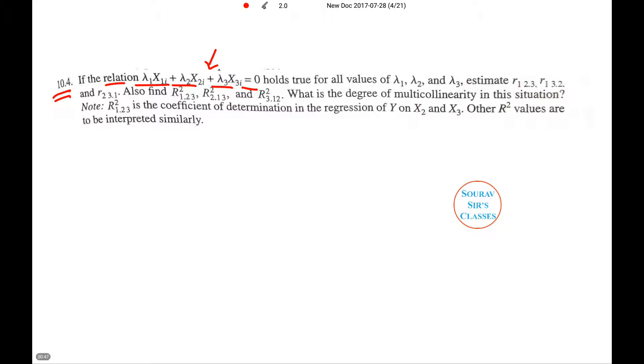If you remember, under multicollinearity, the condition was that all the coefficients, let's say lambda 1, lambda 2, lambda 3, are constants such that not all of them are 0 simultaneously. So when this is proved given this condition, then we say that there is an exact relationship.